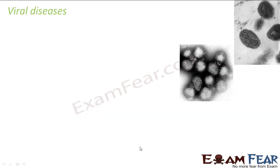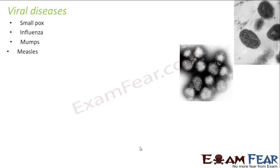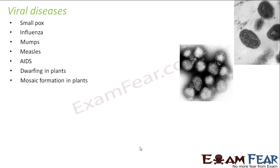Some common viral diseases in human beings include smallpox, influenza, mumps, measles, and AIDS. In plants, viral infections cause dwarfing — that is retarded growth — and mosaic formation, which was shown in the previous slide. These are some of the very common diseases caused by viral infection.